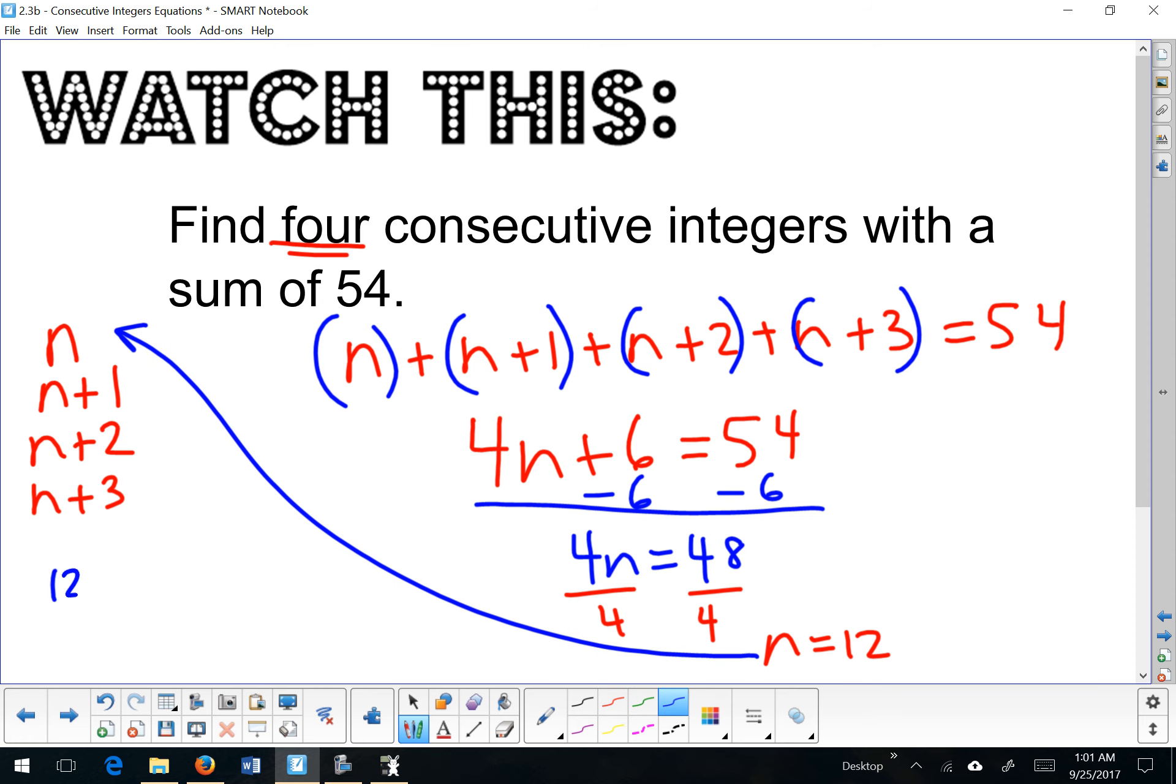So 12 is my first, 12 plus 1 is my next, 12 plus 2 is my third, and 12 plus 3 would be my fourth. So I have 12, 13, 14, and 15. Those are my four consecutive integers.